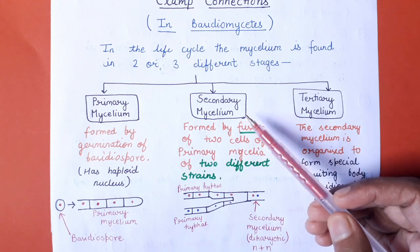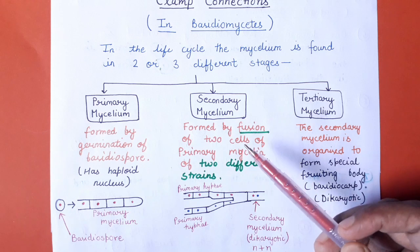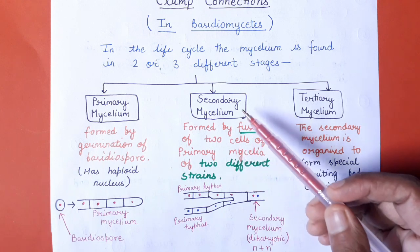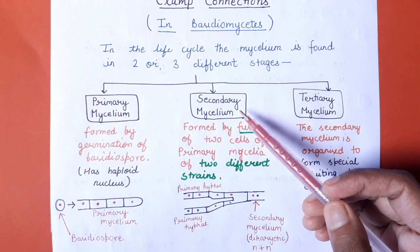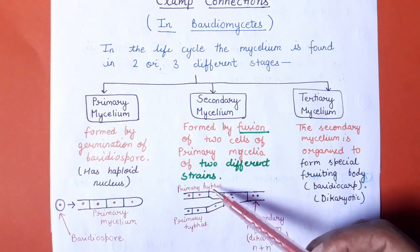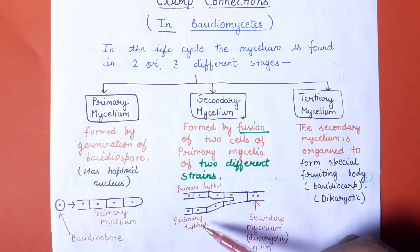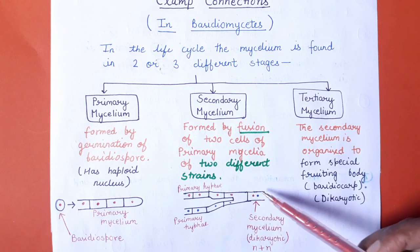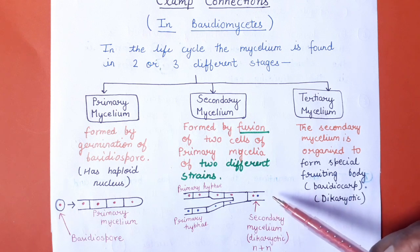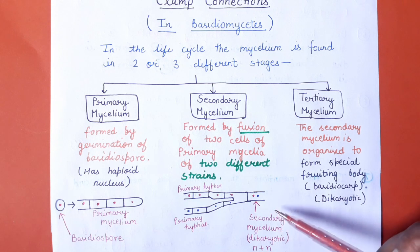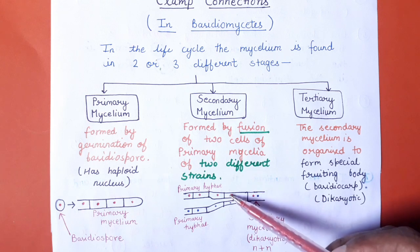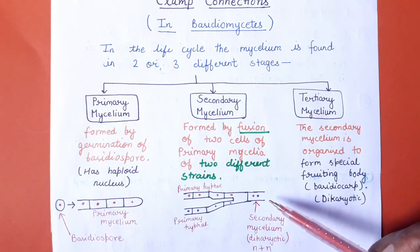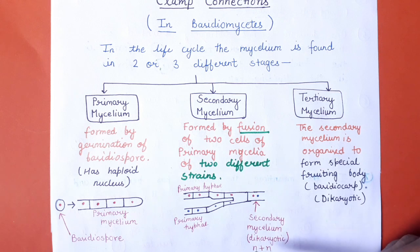Secondary mycelium is formed when two primary mycelia of different strains fuse. You can see here that two primary hyphae of different strains fuse to form secondary mycelium. In this type of mycelium, both strains of nuclei are present in a compartment. This condition is called dicariotic mycelium.